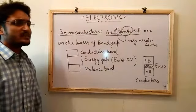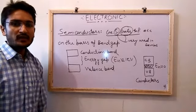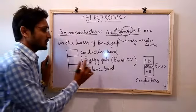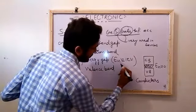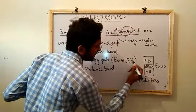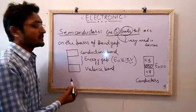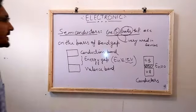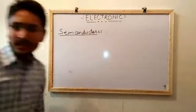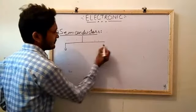So on the basis of band theory, we can explain every type of material. Here we will study only semiconductors — those materials which have nearly one electron volt, maybe sometimes greater or less but nearly one electron volt. Those types of materials are known as semiconductors. There are two types of semiconductors on the basis of band gap.